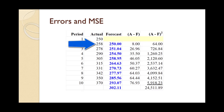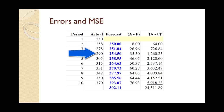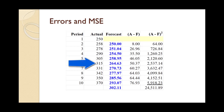258 minus 250 equals 8.00. 278 minus 251.04 equals 26.96. 290 minus 254.5 equals 35.50. 305 minus 258.95 equals 46.05. 215 minus 264.63 equals 50.37.